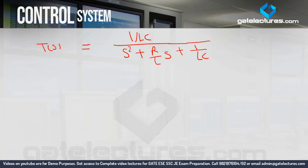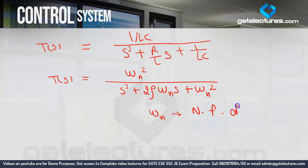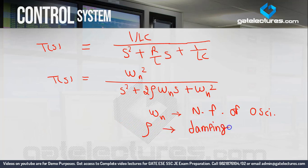If I write this transfer function in control system form: T(s) = ωn² / (S² + 2ζωnS + ωn²). Here, ωn is called the natural frequency of oscillation, and ζ (zeta) is called the damping ratio. You need to be familiar with these terms.